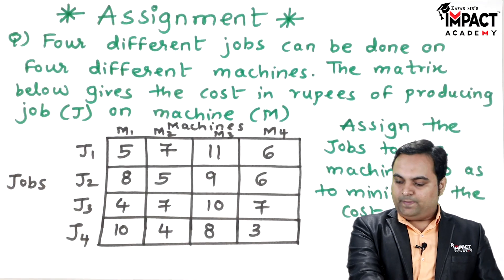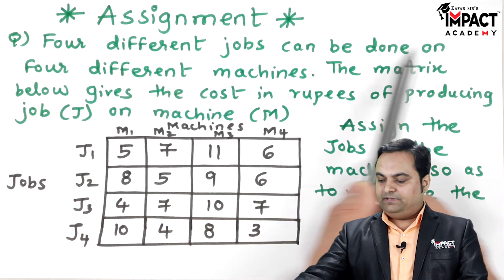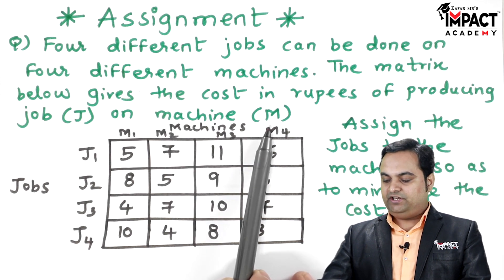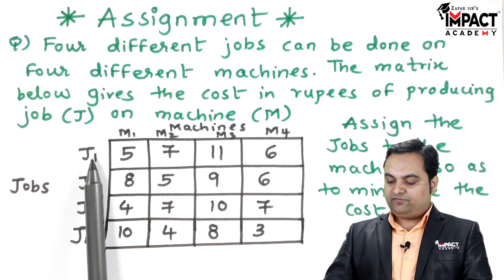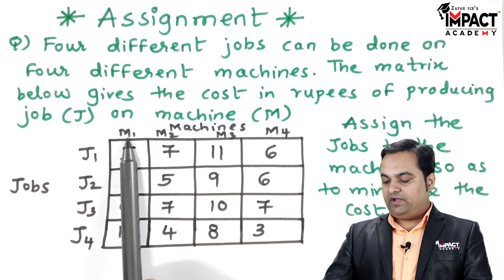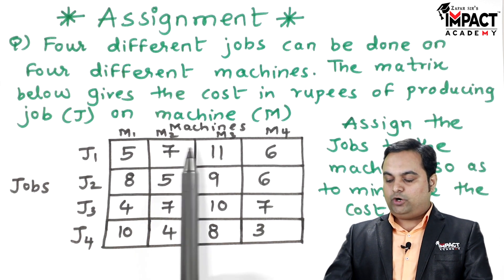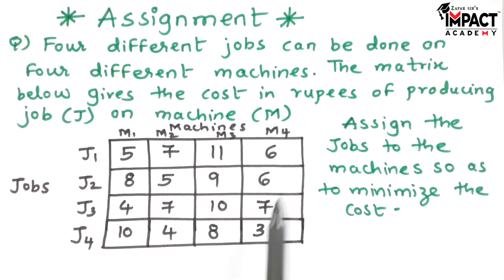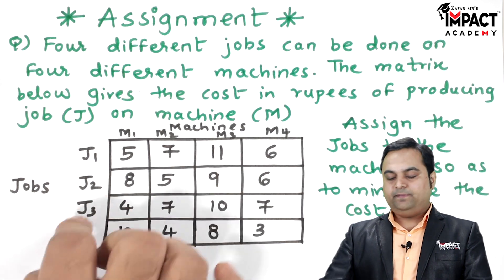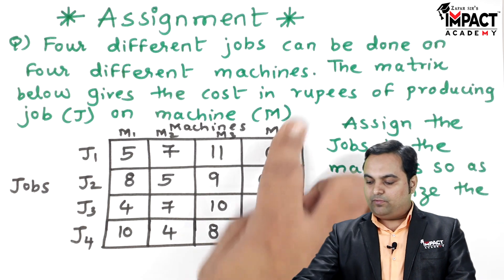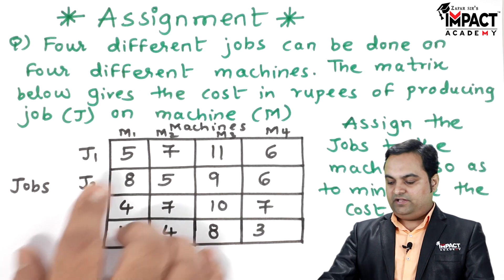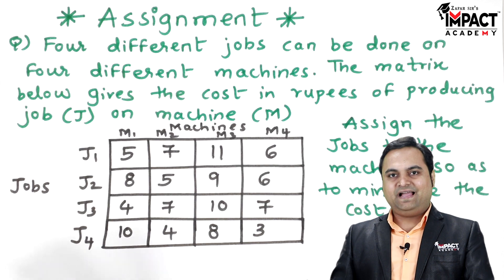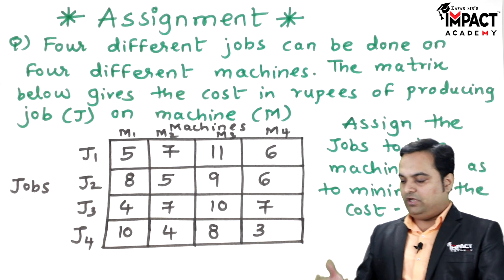Here is the question: four different jobs can be done on four different machines. The matrix below gives the cost in rupees of producing job j on machine m. There are four jobs from J1 to J4 to be produced on machines M1 to M4. We have to assign the jobs to the machines so as to minimize the cost. The cost values may be in hundreds, thousands, or lakhs, but here we have to find the unit cost.